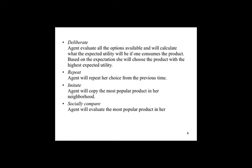We have two thresholds affecting when an agent is satisfied and uncertain. If an agent is unsatisfied but certain, it will deliberate and evaluate all the options available, calculating the expected utility and choosing the product with the highest expected utility. If an agent is satisfied and certain, it will repeat its choice from the previous time step. If an agent is satisfied but uncertain, it will copy the most popular product in the neighborhood. If an agent is unsatisfied and uncertain, it will evaluate the most popular product in the neighborhood and choose it if it increases expected utility compared to sticking with the current choice.